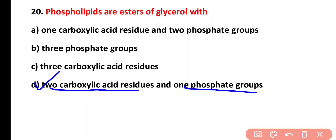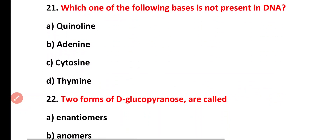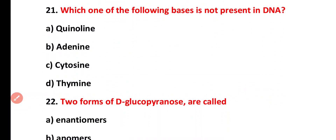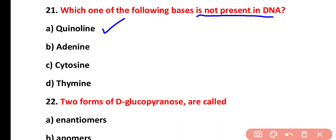Question twenty-one: which of the following bases is not present in DNA? Options: quinoline, adenine, cytosine, thymine. The correct answer is option A. Quinoline is not present in DNA as a nitrogenous base.